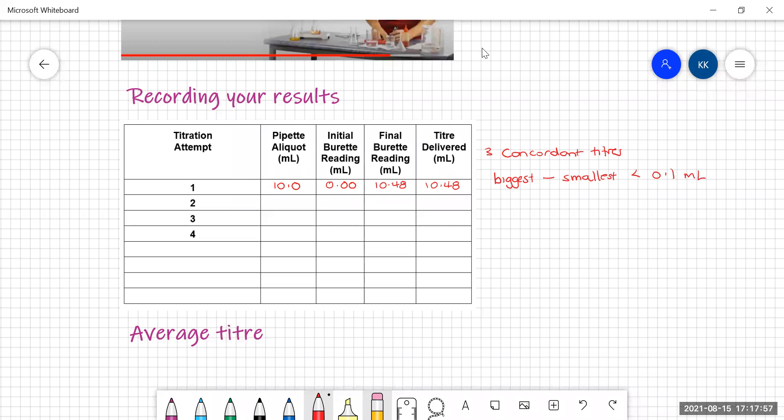Alright, second titration. My pipette volume was still 10.0, but my starting volume now is 10.48 because I'm going to start. I don't need to fill the burette every time. I've got plenty left in the burette. There's 50 mils in a burette. I've got plenty left in there. I can do another titration.